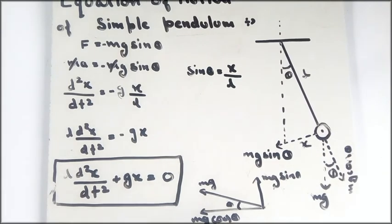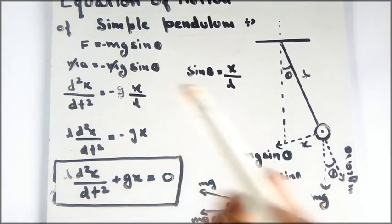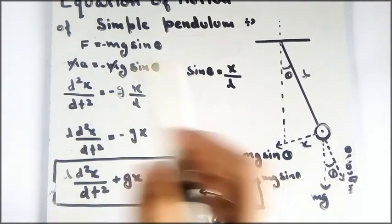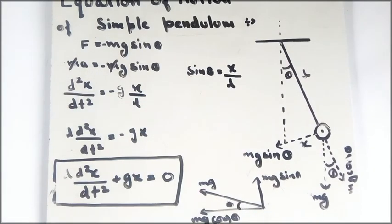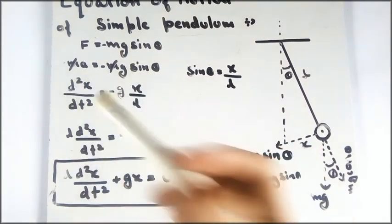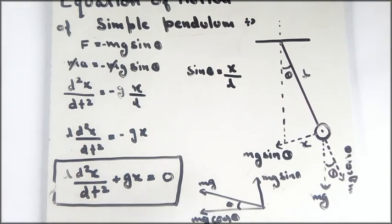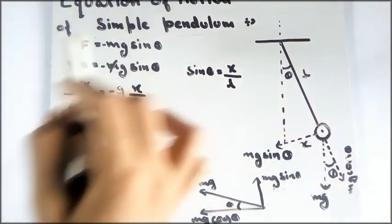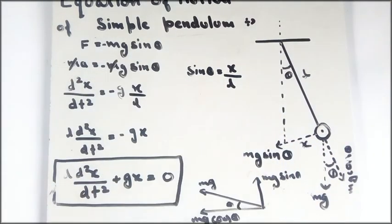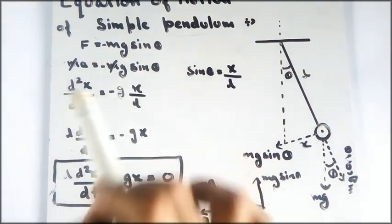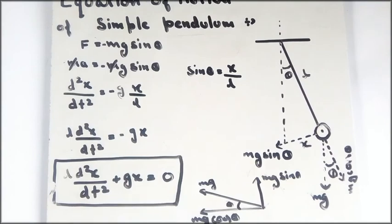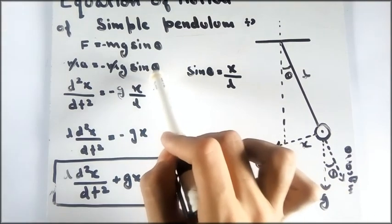The answer is no, because there is no contribution of mass in the equation. That is why mass does not affect the time period or the angular frequency of the pendulum. Acceleration is the double derivative of position, so we write a = d²x/dt².